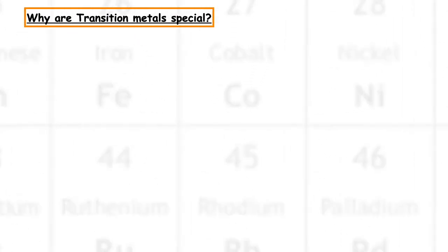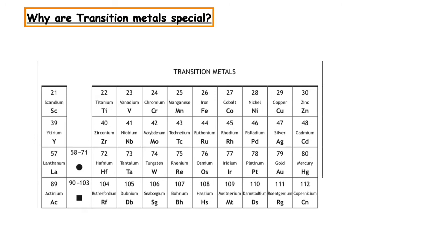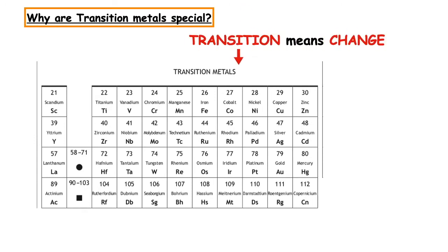The transition metals are a special block of metals found in the middle of the periodic table. The word transition means change, meaning they can change their valency — that's the number of bonds that element makes with other atoms. For transition metals, we represent valency using Roman numerals.